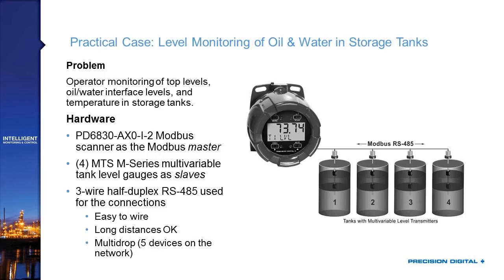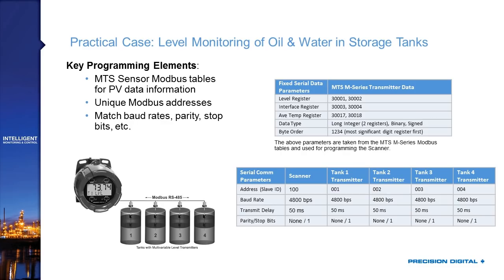Once wired with RS-485 going to all devices, they have to program the system. They use the MTS sensor Modbus tables to look up process variable data — a quick lookup tells them the register location for the level process variable, the interface level register, and the temperature register. As they step through programming the Modbus scanner, they know which registers to request and what information each contains. The Modbus instruction manual also provides data type information and byte order information for reference.